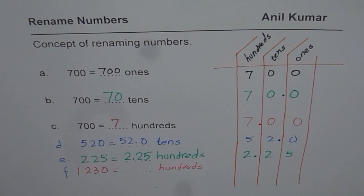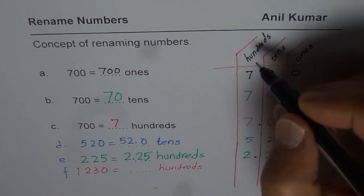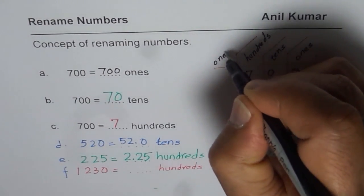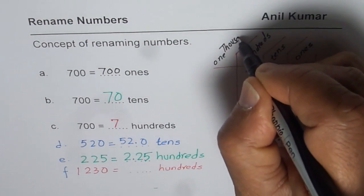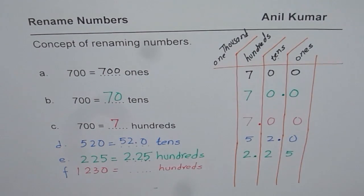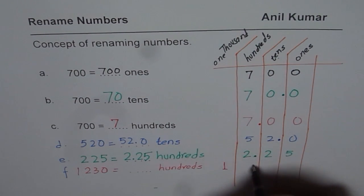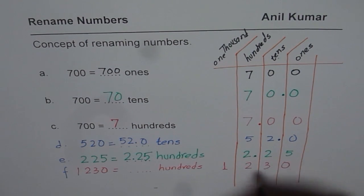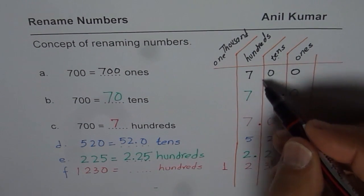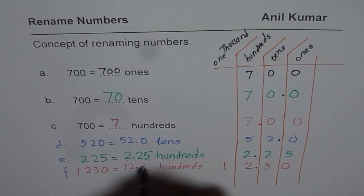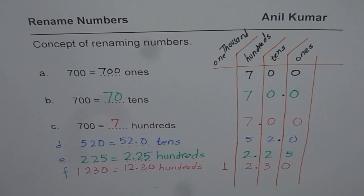Now for the last number, 1230. Let me extend the place value chart to the next period — so this is now the thousands place, which is to the left of hundreds. Writing 1230 in the chart: since we want hundreds, put a decimal at the hundreds column. The number becomes 12.30 hundreds. So that is how you rename your numbers.